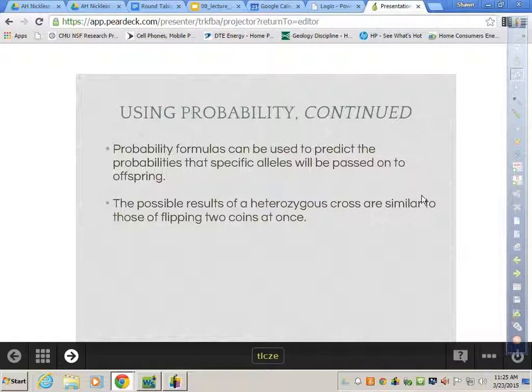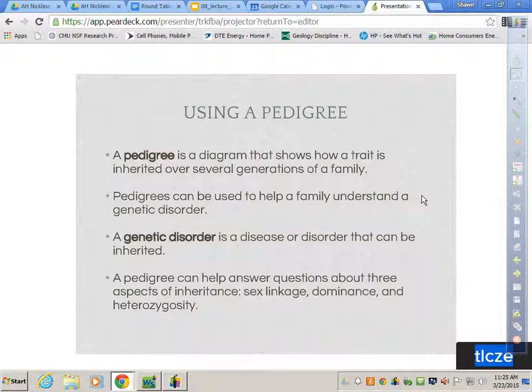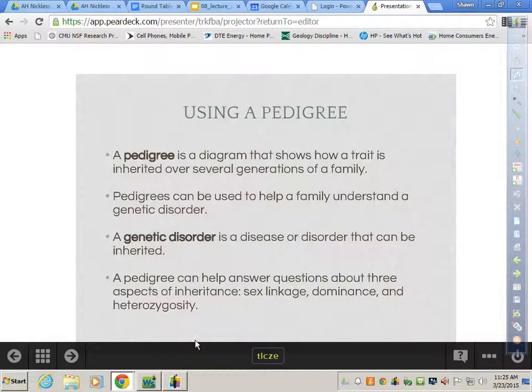A pedigree is a diagram that shows how a trait is inherited over several generations of a family. When you see the word pedigree, what do you think of? Dog food. A pedigree can be used to help a family understand a genetic disorder. They use these actually in hospitals when they sit down with patients. A genetic disorder is a disease or disorder that can be inherited. A pedigree can help answer questions about three aspects of inheritance: sex linkage, dominance, and heterozygosity. We're going to walk through a few examples together here to help show you how you would do that.